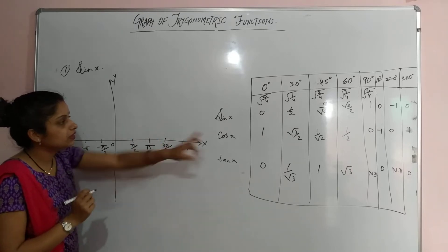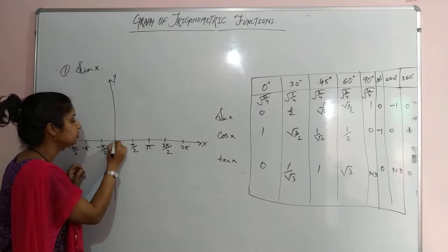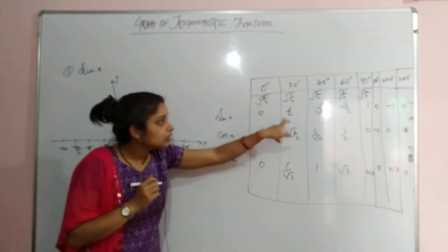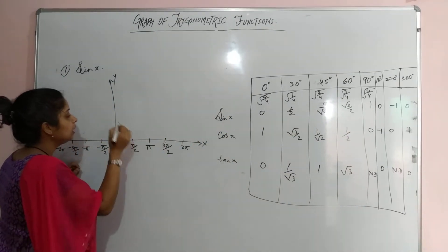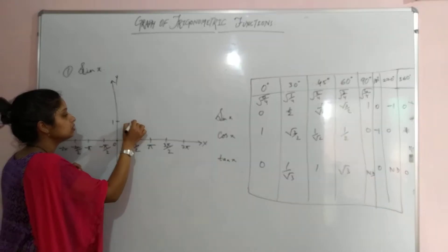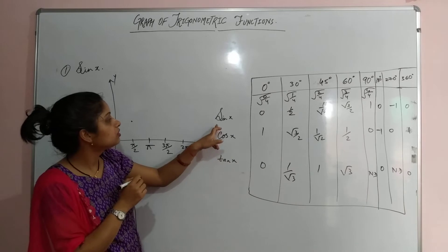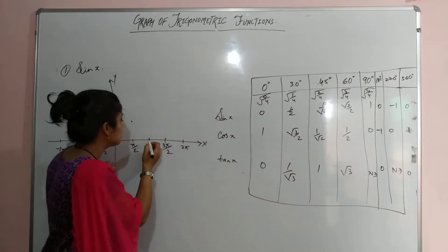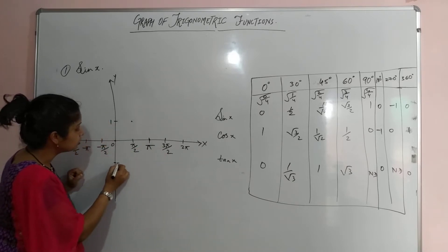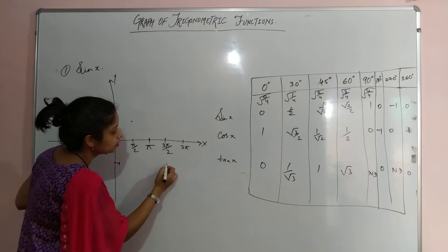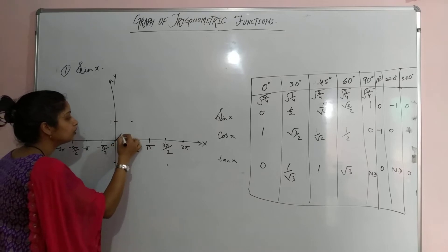At angle 0, sine is 0, so the point is at the origin. At π/2, sine is 1, so we plot the point at 1. At π, sine is again 0. At 3π/2, sine is −1, so we take that point downward. At 2π, it is again 0. Joining these points gives a wave-like curve.